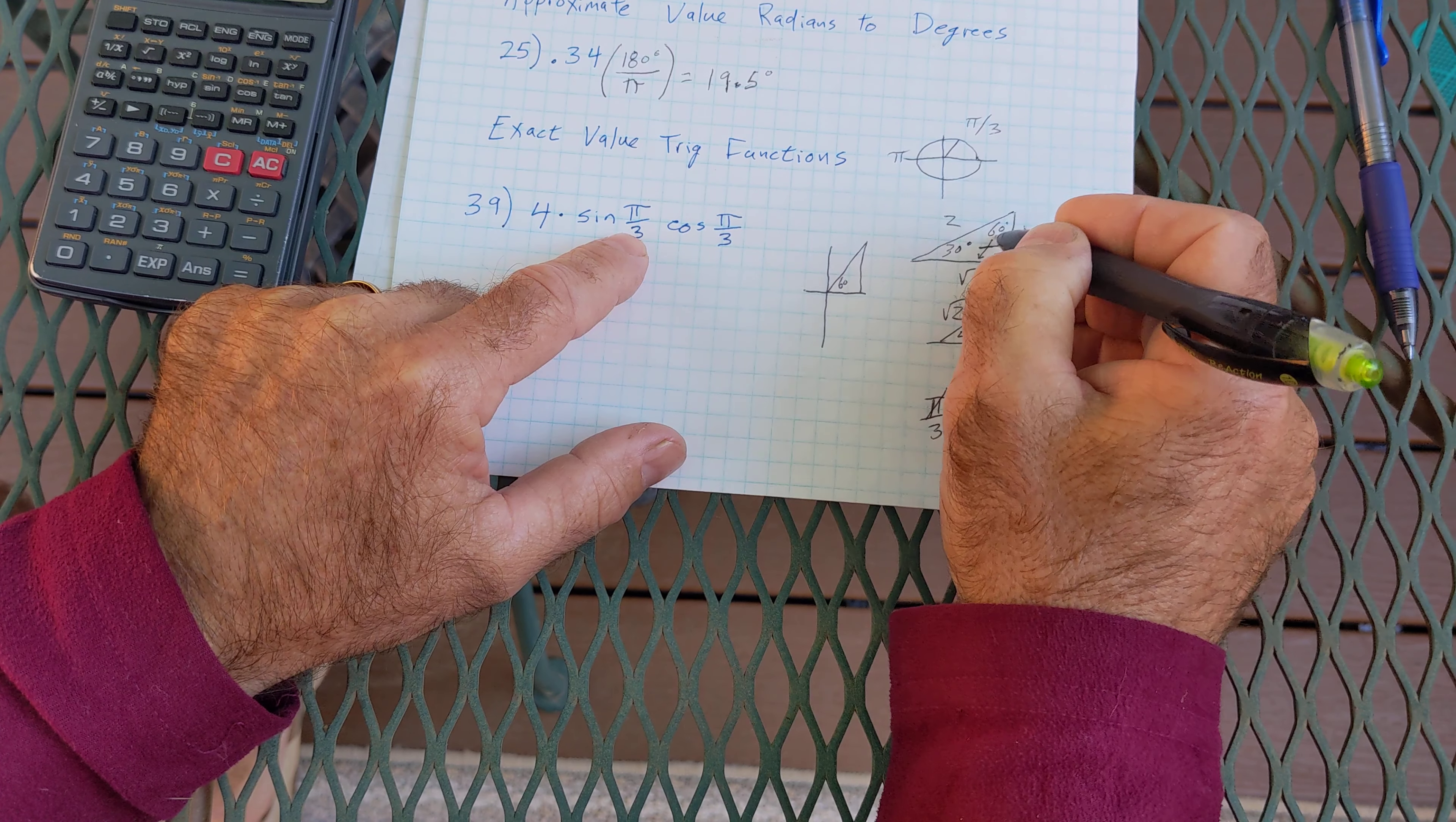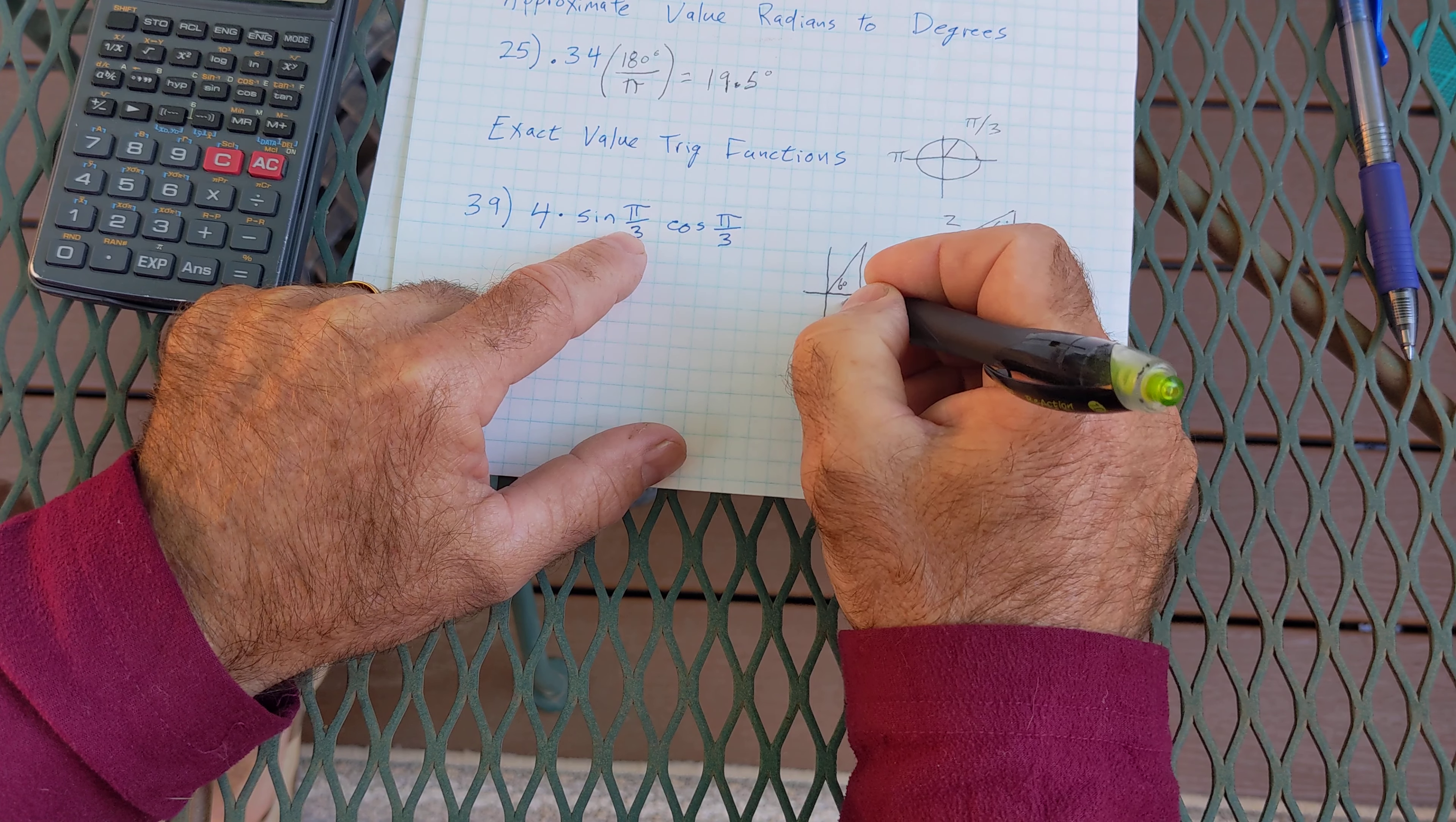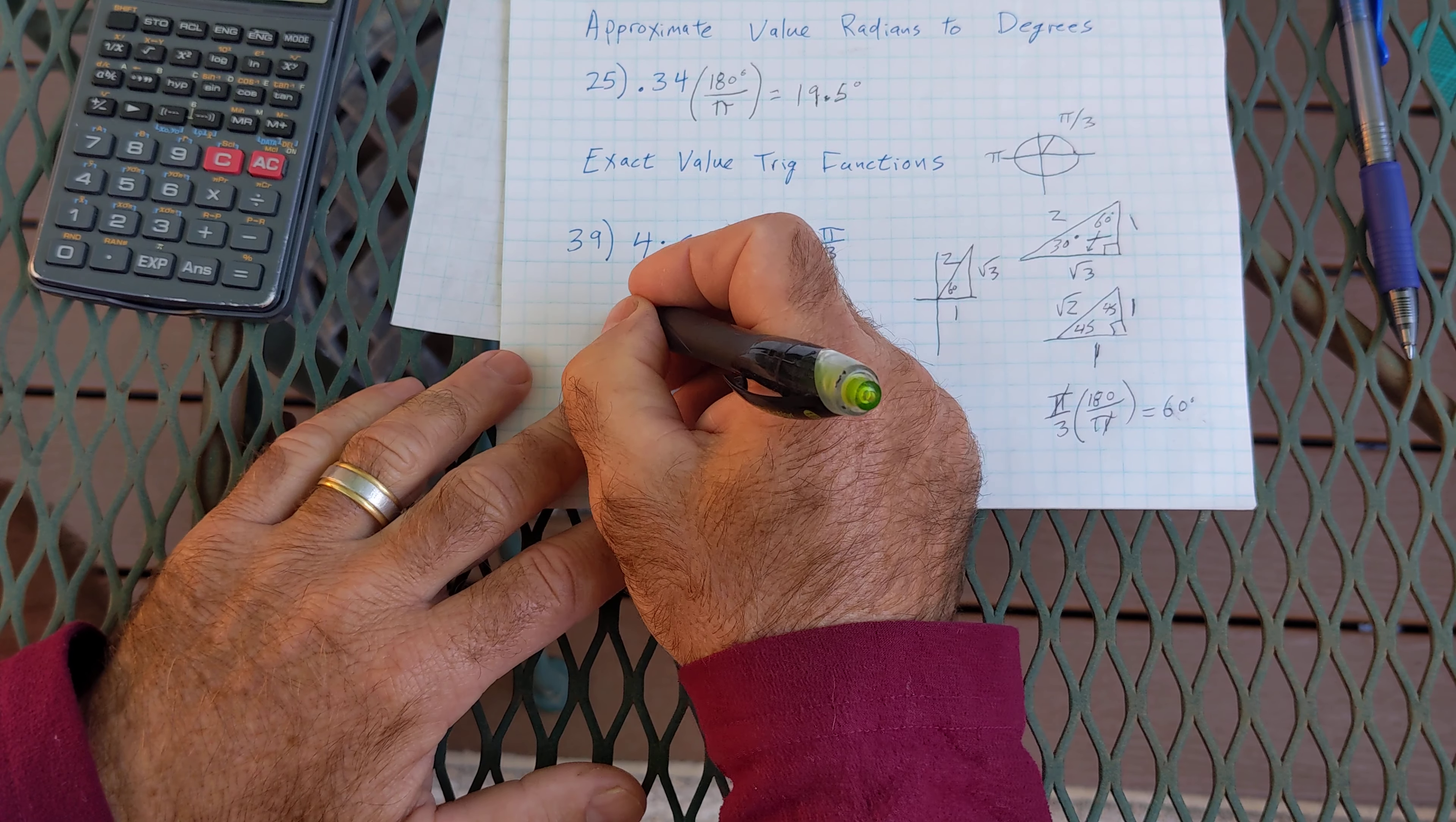The side opposite it, opposite 60, would be root 3. Side opposite 30 would be 1. The hypotenuse would be 2. So this 4 is still a 4.